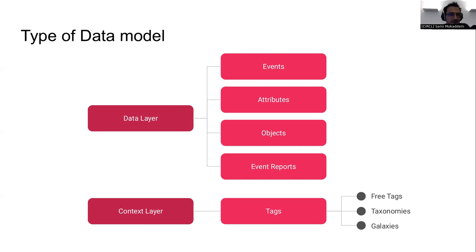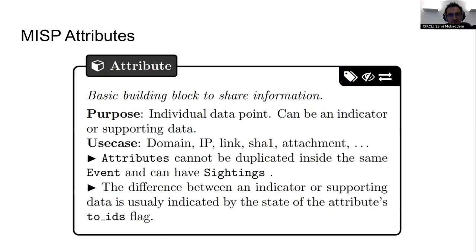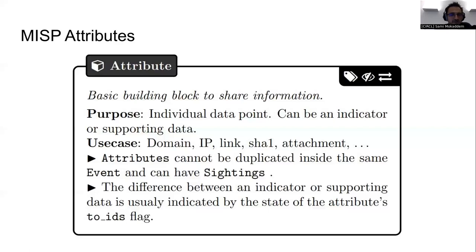Finally, galaxies: like taxonomies but with additional metadata. For example, we have a galaxy called the country galaxy, with many entries called clusters — each cluster is a country. In the country galaxy, the Luxembourg cluster has metadata including language spoken, currency, TLDs, population, and so on. You have the galaxy containing all entries called clusters, each with rich metadata. Another example is the threat actor galaxy with the APT29 cluster, which has meta information such as the state sponsoring it, the confidence level, the different victims, and relationships to other galaxy clusters.